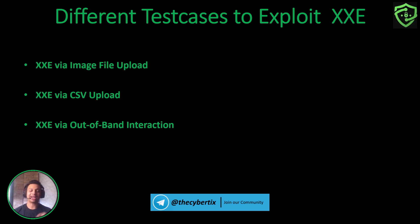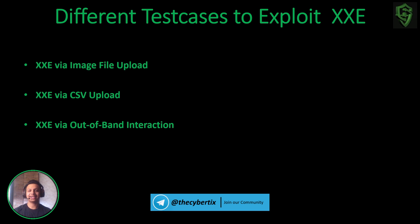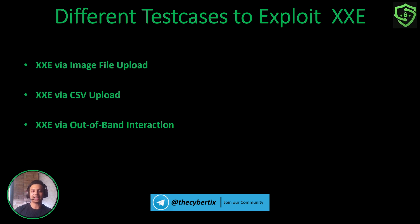There are different test cases to exploit XXE vulnerability. XXE can be performed via image file upload using SVG files. Another method is XXE via CSV upload, such as an Excel sheet. There is also XXE via out-of-band interactions, which can be exploited with the help of an SSRF attack.